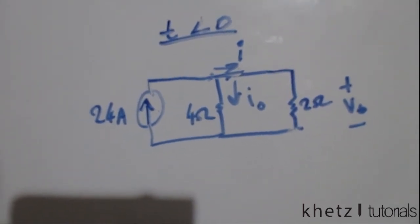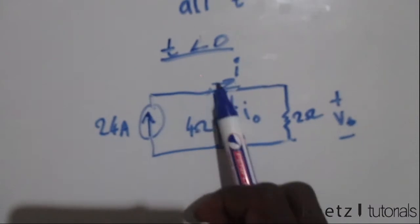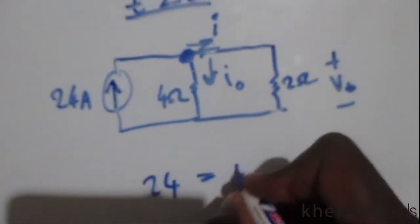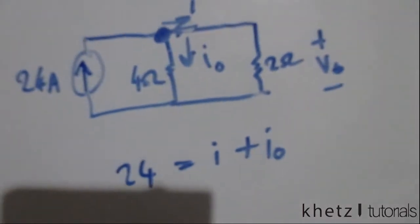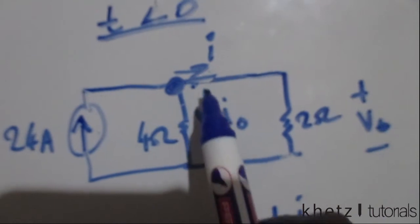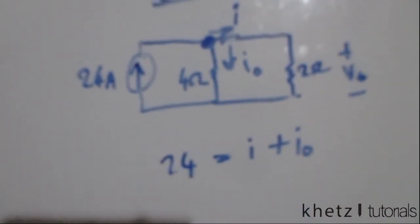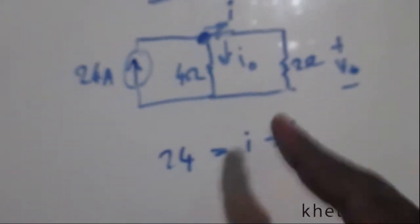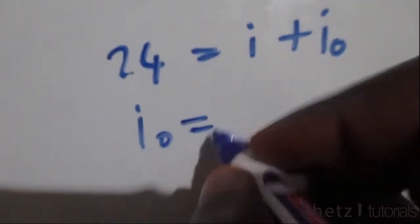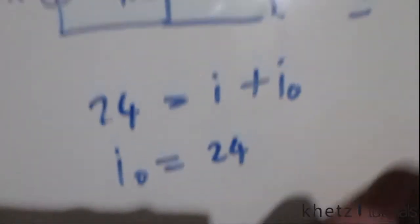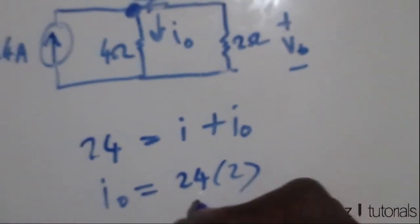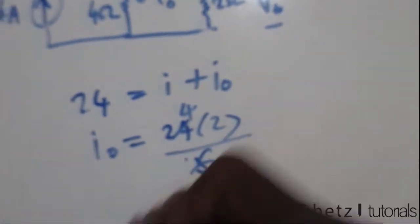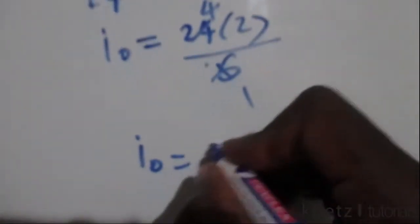Now let's find each of these values for t less than zero. The current at this junction splits into i and i_o, so 24 equals i plus i_o. Let's use current division to find i_o first. Using current division: i_o equals 24 multiplied by two divided by four plus two, which is six. So i_o equals four multiplied by two, which is eight amperes.